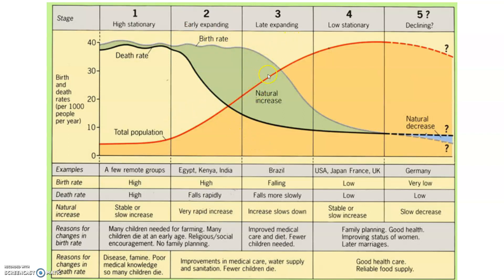That growth rate is going to keep growing until those countries realize we don't need to have as many children. You have more people moving into cities, so you don't have as much of a farm life. You see more medicine, better diet, better living conditions overall, and you don't need as many children to help run the farm. So you see that the growth rate begins to come down and will start to kind of level off in the post-industrial stage.